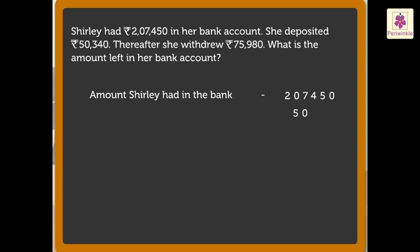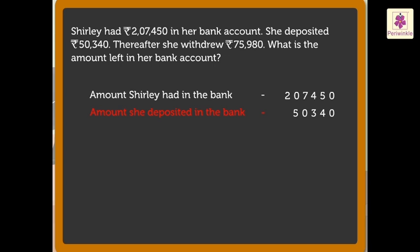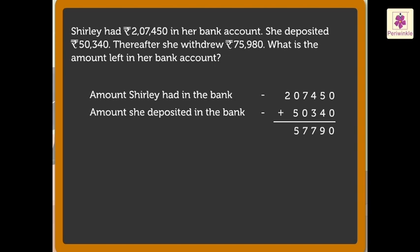Rupees fifty thousand three hundred forty is the amount she deposited in her bank. We write this in a statement as: Amount she deposited in the bank — rupees fifty thousand three hundred forty. Now, let us add these numbers. Thus, the total amount Shirley has in the bank is rupees two lakh fifty-seven thousand seven hundred ninety.